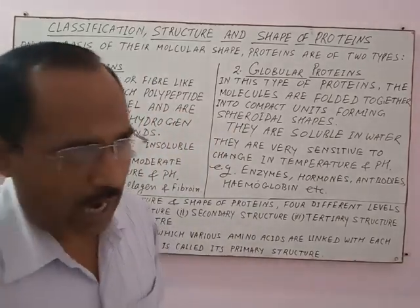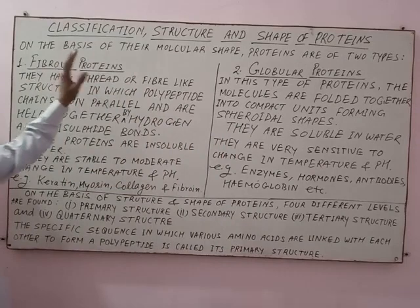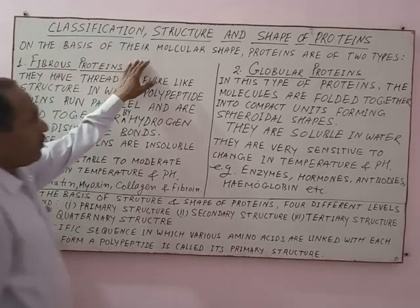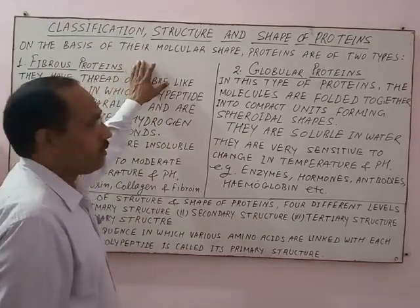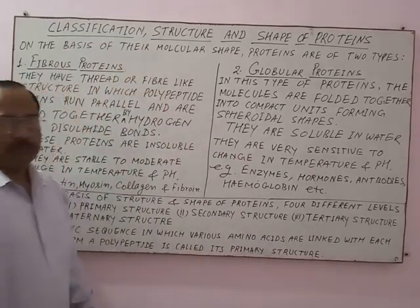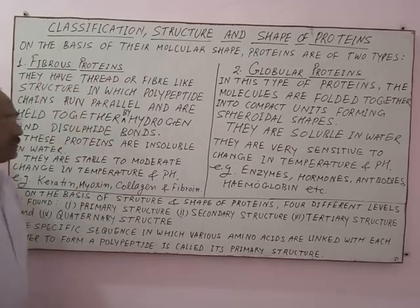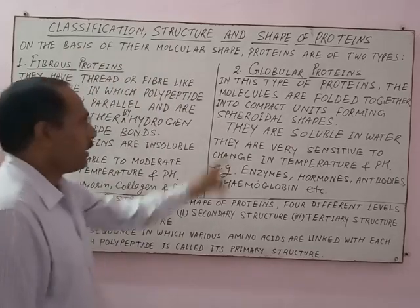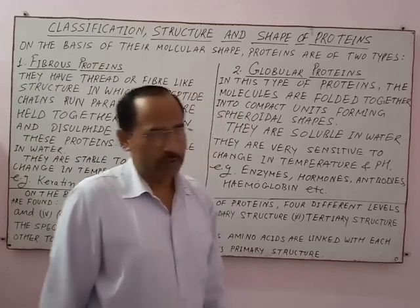On the basis of molecular shape, proteins are of two types: one is fibrous proteins, and another is globular proteins.